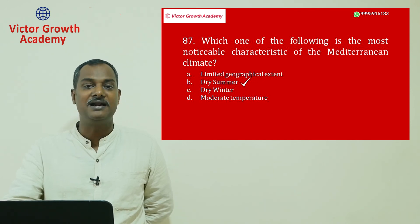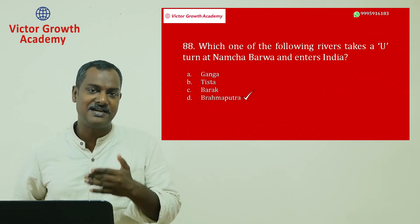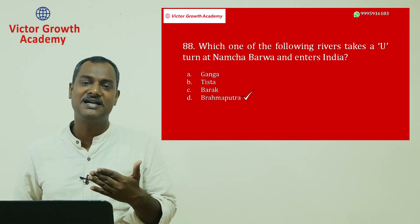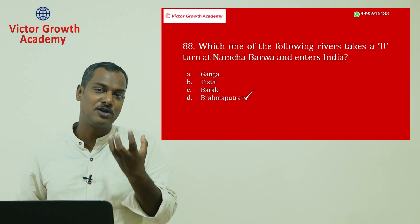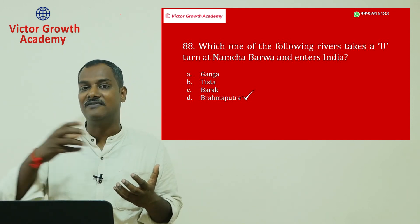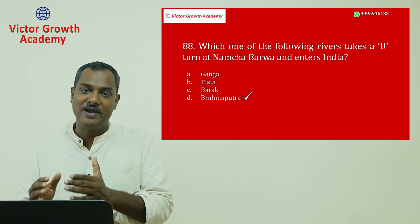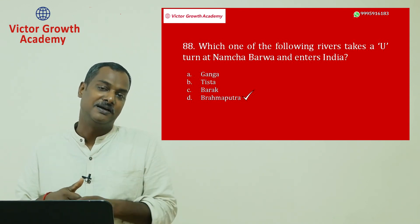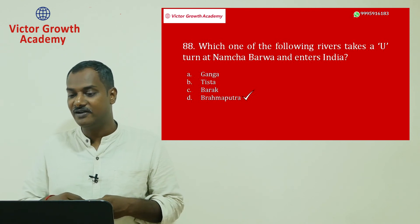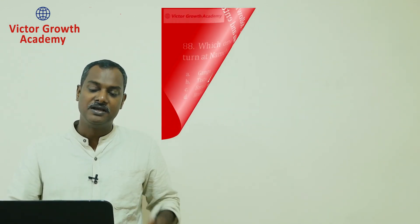Question 87 answer is B: dry summer. Question number 88 is from seventh standard geography: which river takes a U-turn after Namcha Barwa mountain and enters India? The Brahmaputra starts near Lake Manasarovar — near where the Indus starts — but both travel in opposite directions. The Brahmaputra runs parallel to the Himalayas north of them as the Tsangpo, then after Namcha Barwa it takes a U-turn and enters India as the Dihang. Then Dibang and Subansiri are added, and it becomes the Brahmaputra. Question 88 answer: Brahmaputra.